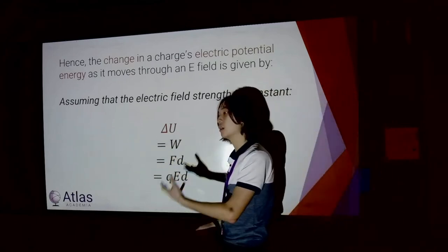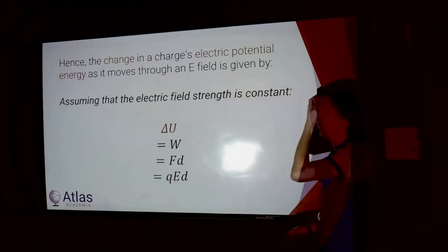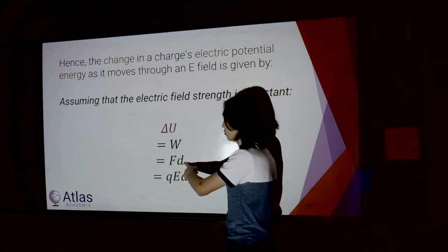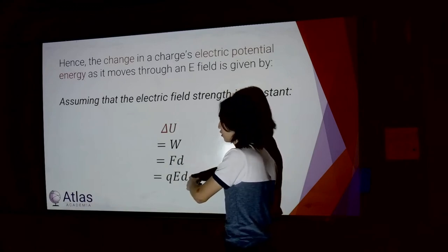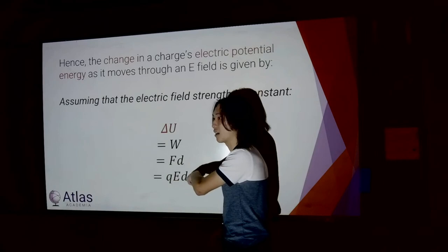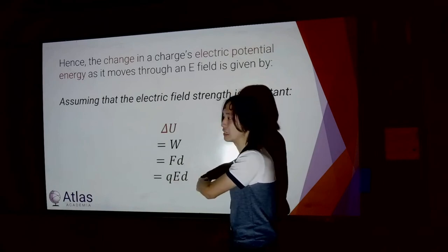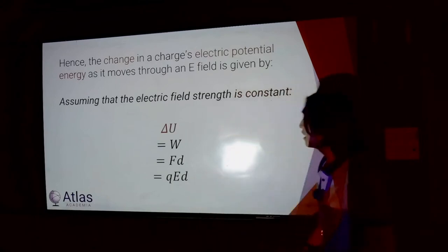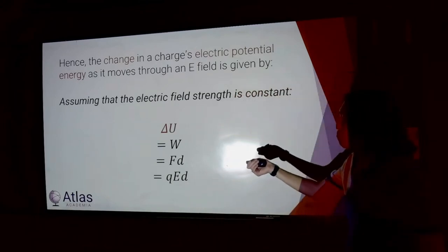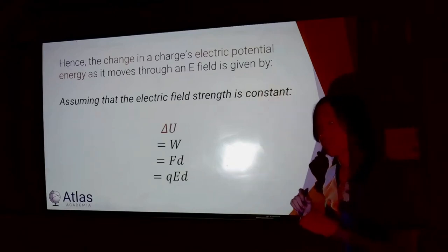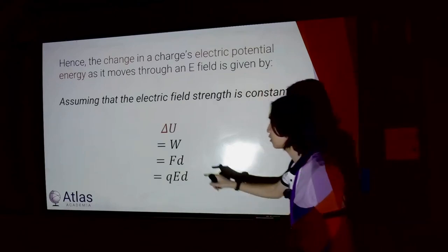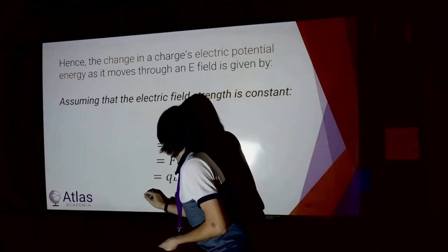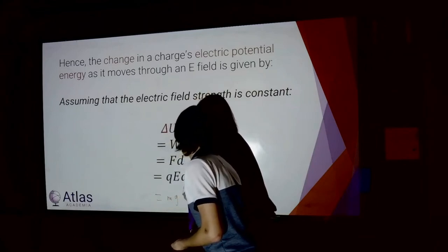D is the common notation we use in electricity — this really comes from F times S, so you could write E as a vector, D as a vector, and really QED cos theta. All of that would be valid. What I'm telling you is that work is basically analogous to electric potential energy. Electric potential energy equals QED, just like gravitational potential energy equals MgH.